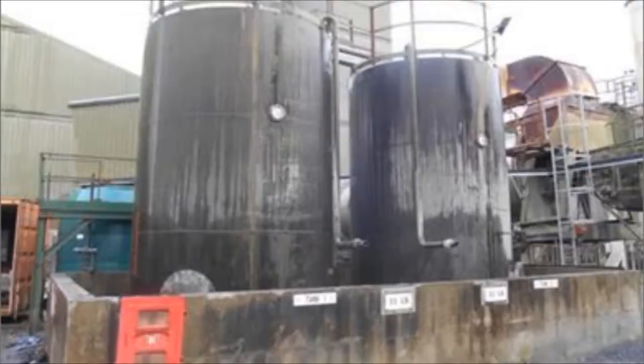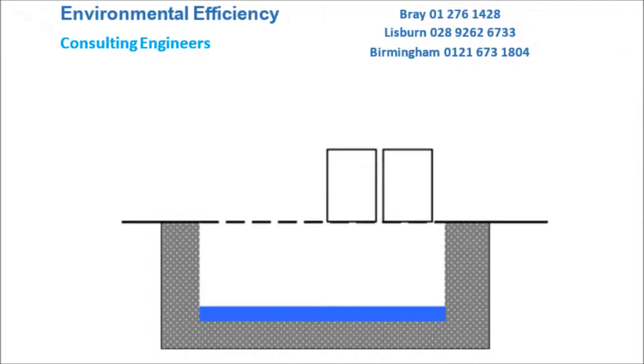The most common type of bund is a concrete or block bund, usually enclosing a large tank. This type of bund is termed local containment.